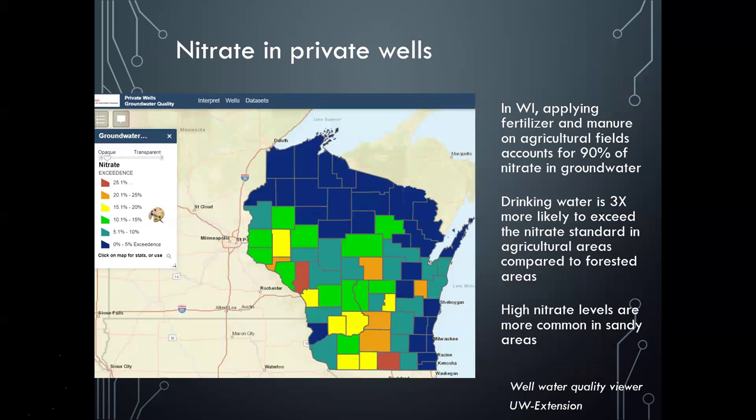Nitrate also acts as an indicator — it's easy to test for, and if your nitrate level exceeds 10 milligrams per liter, data shows your water is also more likely to contain pesticides. Looking statewide at the percentage of private wells exceeding 10 parts per million, the northern part of Wisconsin is mostly low, while the central and southern parts have higher levels. In Wisconsin, applying fertilizer and manure on agricultural fields accounts for 90% of nitrate in groundwater, and drinking water is three times more likely to exceed the nitrate standard in ag areas compared to forested areas.